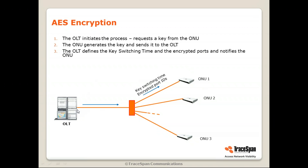In GPON, AES encryption is only in the downstream, because in the upstream we don't have this security issue — whatever the ONU sends, only the OLT can see it because of the isolation. In newer, more advanced technologies like XGS-PON, XGPON1, and NGPON2, there's also an option for encryption in the upstream, but this will be discussed in a separate video.